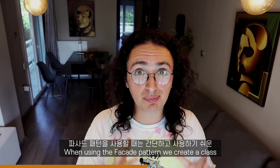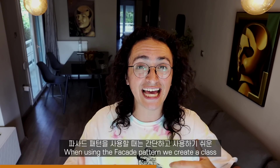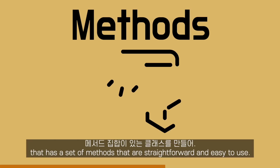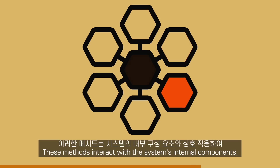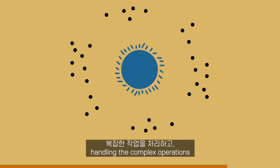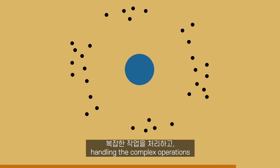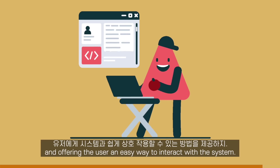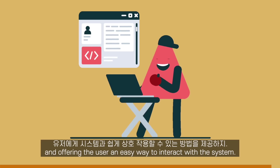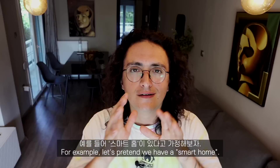When using the facade pattern we create a class that has a set of methods that are straightforward and easy to use. These methods interact with the system's internal components, handling the complex operations and offering the user an easier way to interact with the system.